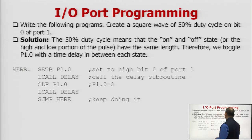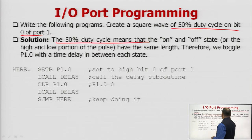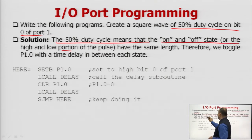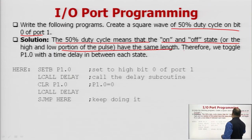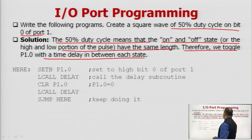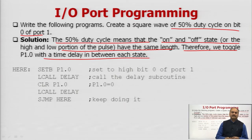Write a program to create a square wave of 50% duty cycle on bit 0 of port 1. A 50% duty cycle means the on and off states, or the high and low portions of the pulse, have the same length. Therefore, we toggle P1.0 with a time delay between each state. T-on must equal T-off for a 50% duty cycle.